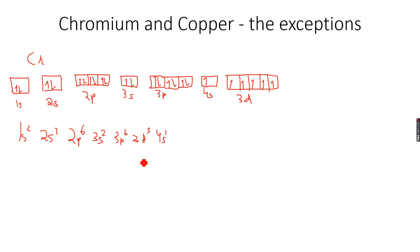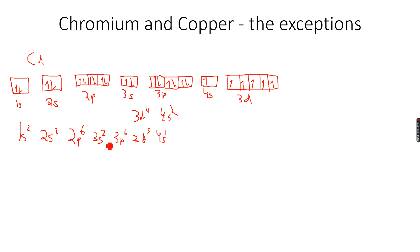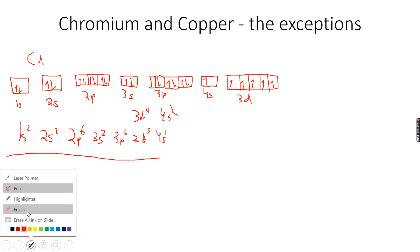So this is what it becomes. What we originally got was 3d4, 4s2 — but 3d5, 4s1 is much more stable than 3d4, 4s2, and that is why this is the correct configuration of chromium.